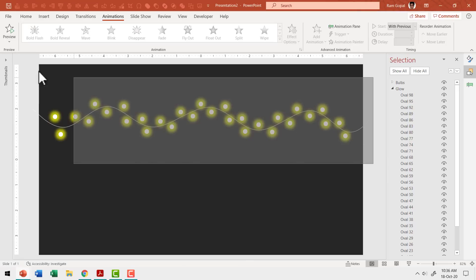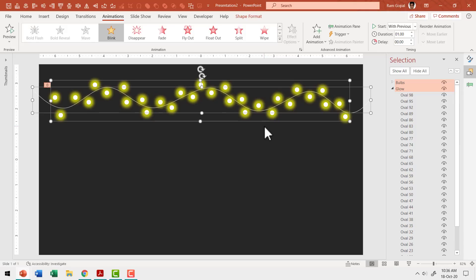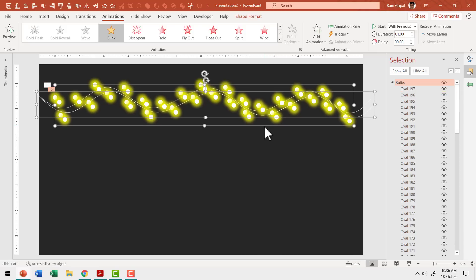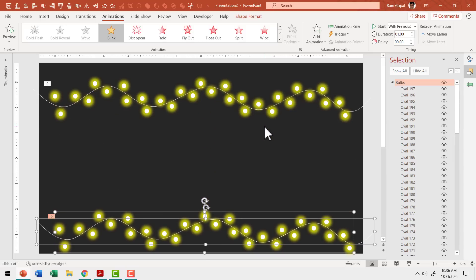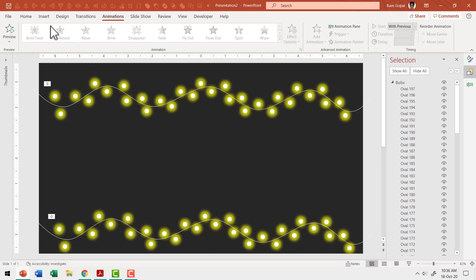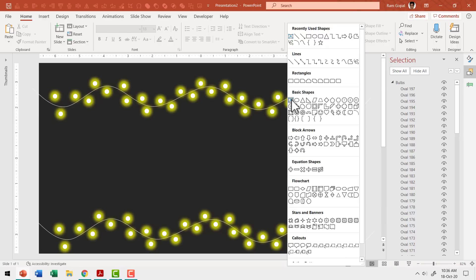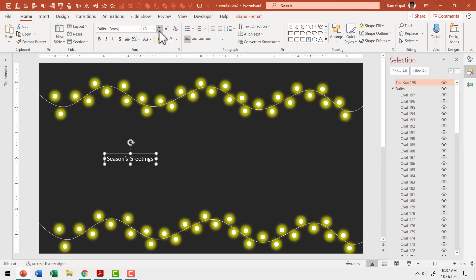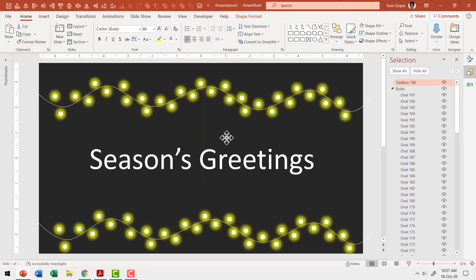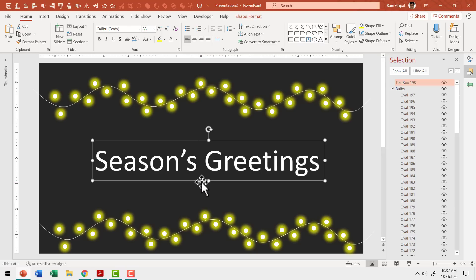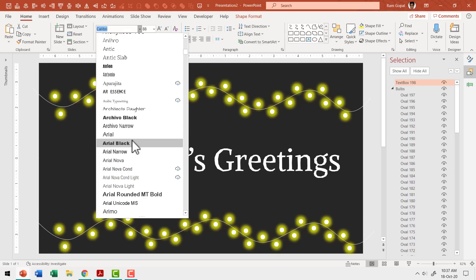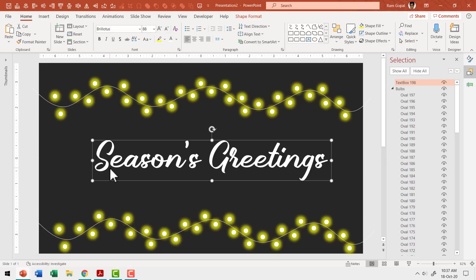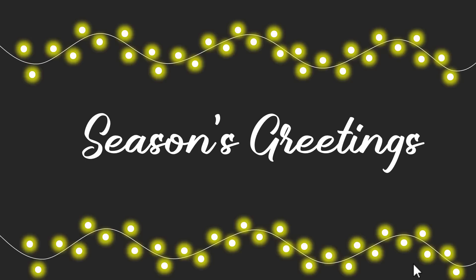To complete the E-Greeting, select everything and move it slightly up to create the top border. Press Control D to create a duplicate and move it down to create the bottom border. Then use a text box to write your message — I'll write 'Seasons Greetings'. Change the font color to white and increase the font size. For an additional effect, you can use a handwritten font like Bril Lotus. When you go to Slide Show, you can see the complete effect — a nice-looking E-Greeting.